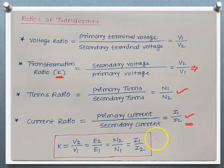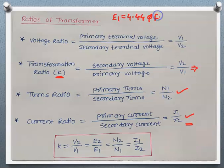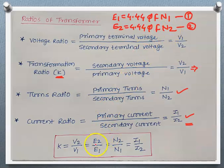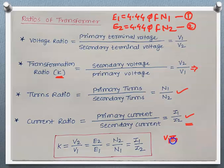We know the EMF expressions: E1 equals 4.44 × F × N1 × φm, and E2 equals 4.44 × F × N2 × φm. When we take the ratio of these two, we get E1 upon E2 equals N1 upon N2. Conversely, E2 upon E1 equals N2 upon N1.